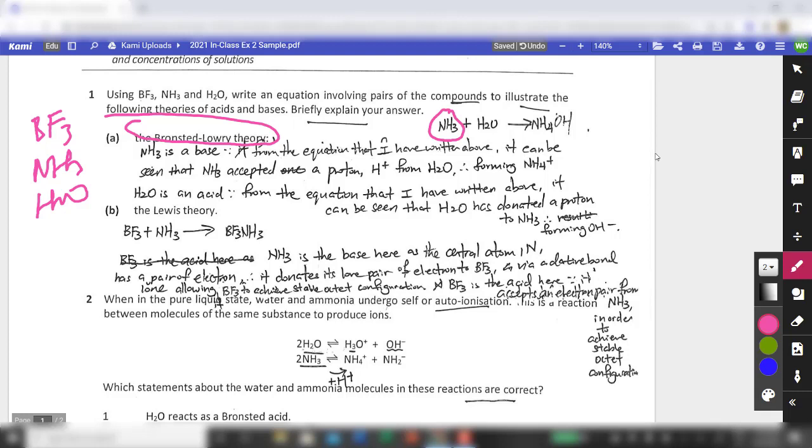So in this case, the student wrote that ammonia accepted a proton from water. I think that's fine. And then therefore, H2O is what we call the Bronsted-Lowry acid. And in our case here, ammonia is the Bronsted-Lowry base because it accepts a proton. And H2O donates a proton, so therefore H2O is a Bronsted-Lowry acid. So that's fine.